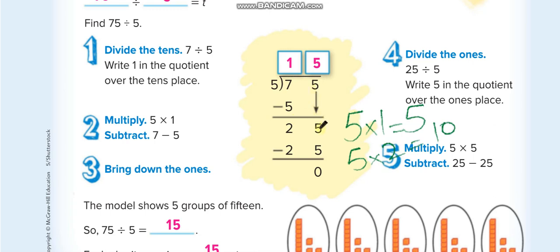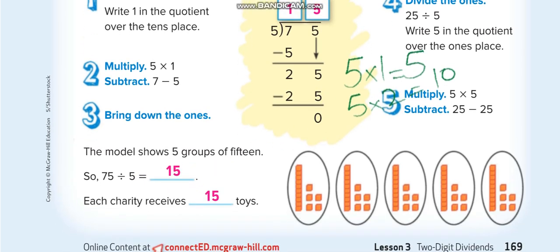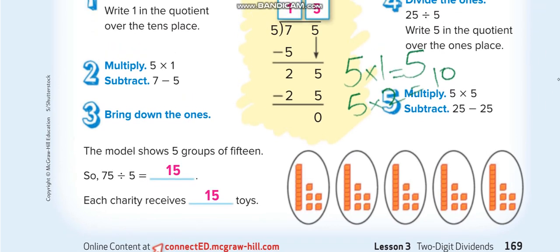Now we'll think: 5 times what will give me 25? So 5 times 5 equals 25. So the quotient is 15. 25 minus 25 equals zero, the remainder is zero. So each charity will get 15. Write 15 here.